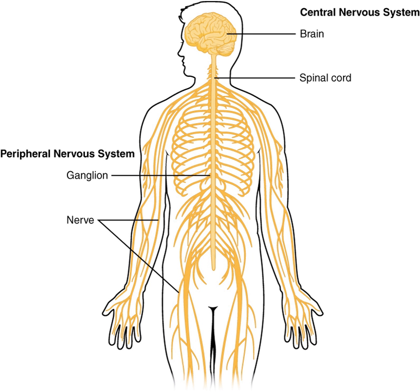This differentiates the CNS from the PNS, which consists of neurons, axons, and Schwann cells. Oligodendrocytes and Schwann cells have similar functions in the CNS and PNS, respectively. Both act to add myelin sheaths to the axons, which acts as a form of insulation allowing for better and faster proliferation of electrical signals along the nerves. Axons in the CNS are often very short, barely a few millimetres, and do not need the same degree of isolation as peripheral nerves.